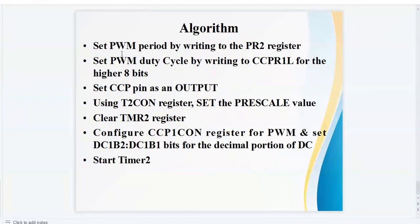Finally, the algorithm. Set PWM period by writing to the PR2 register. Set PWM duty cycle by writing to the CCPR1 lower byte for the higher 8 bits. Set CCP pin as an output. Using timer 2 control register, set the pre-scale value. Clear the timer 2 register. Configure the CCP1CON register for PWM and set the duty cycle bits for the decimal portion of duty cycle, and start the timer 2.